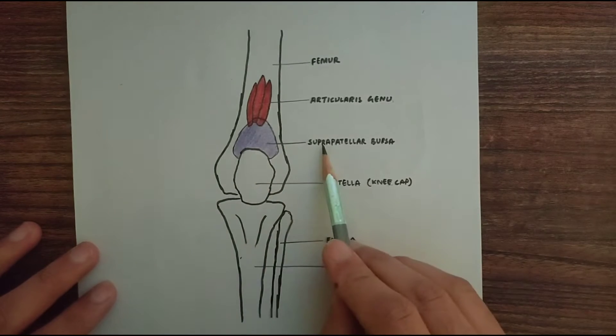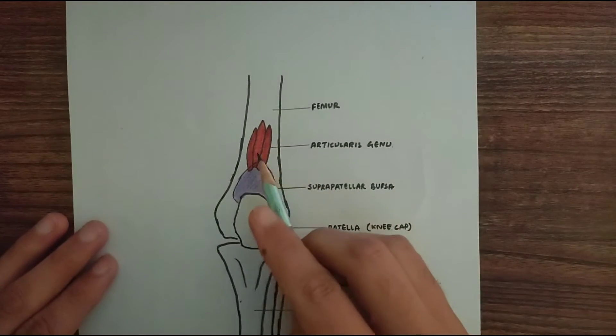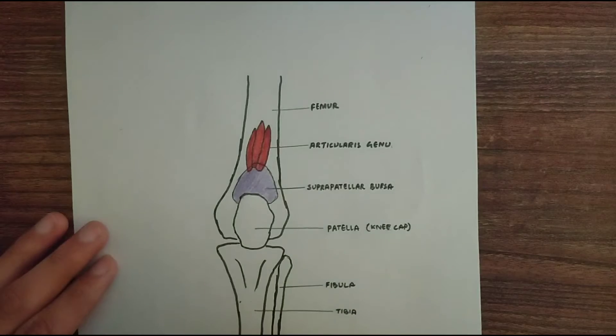Superior to the patella we have the suprapatellar bursa. This is the suprapatellar bursa and finally comes the Articularis genu muscle itself.